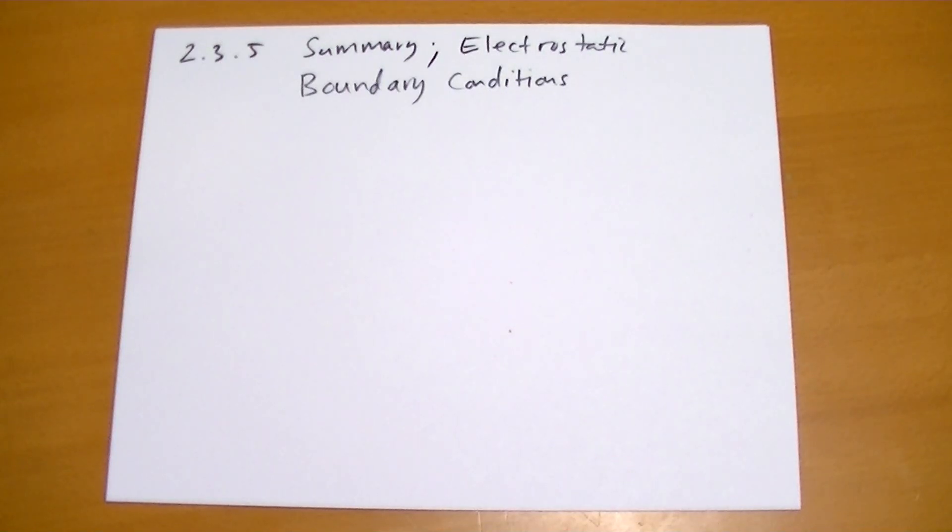This is section 2.3.5, a summary of what we've just learned, as well as a discussion about electrostatic boundary conditions.